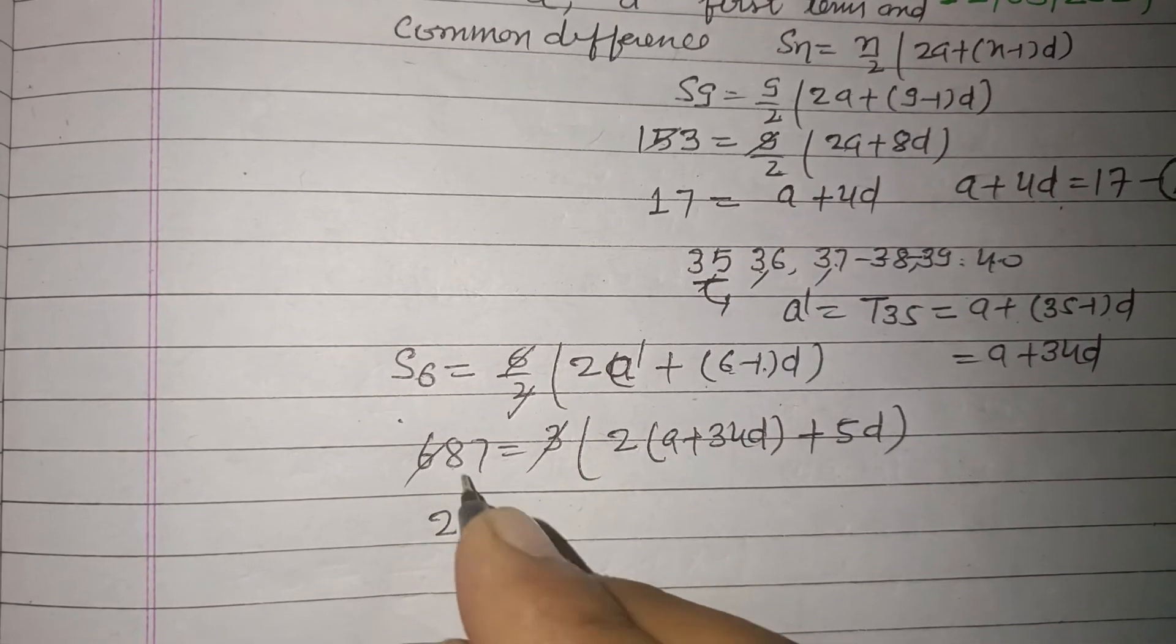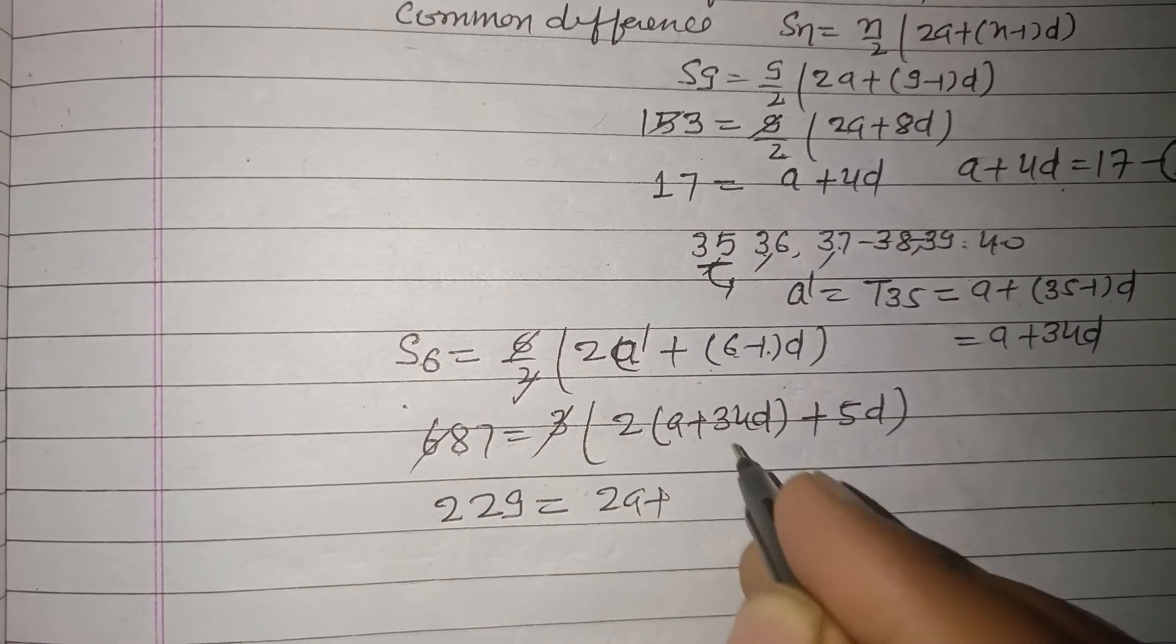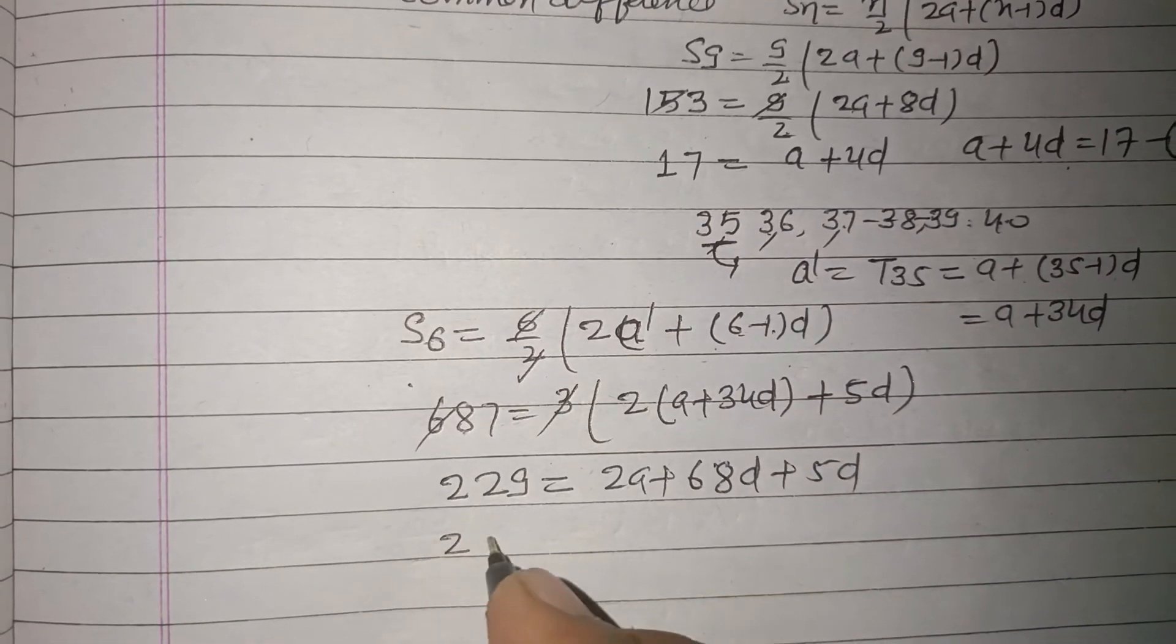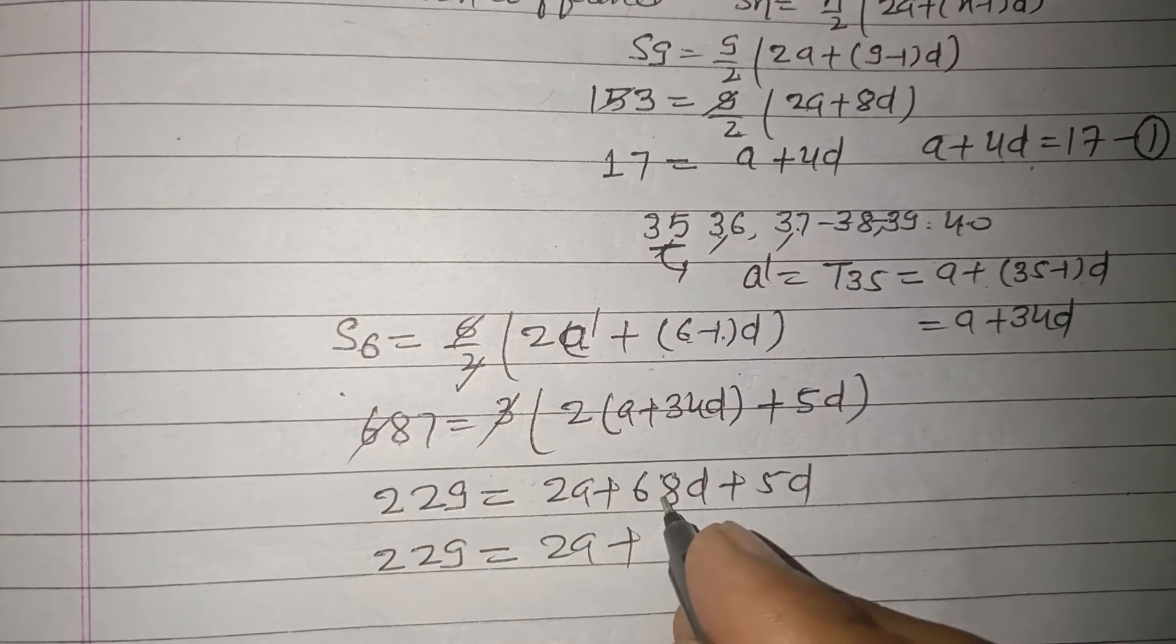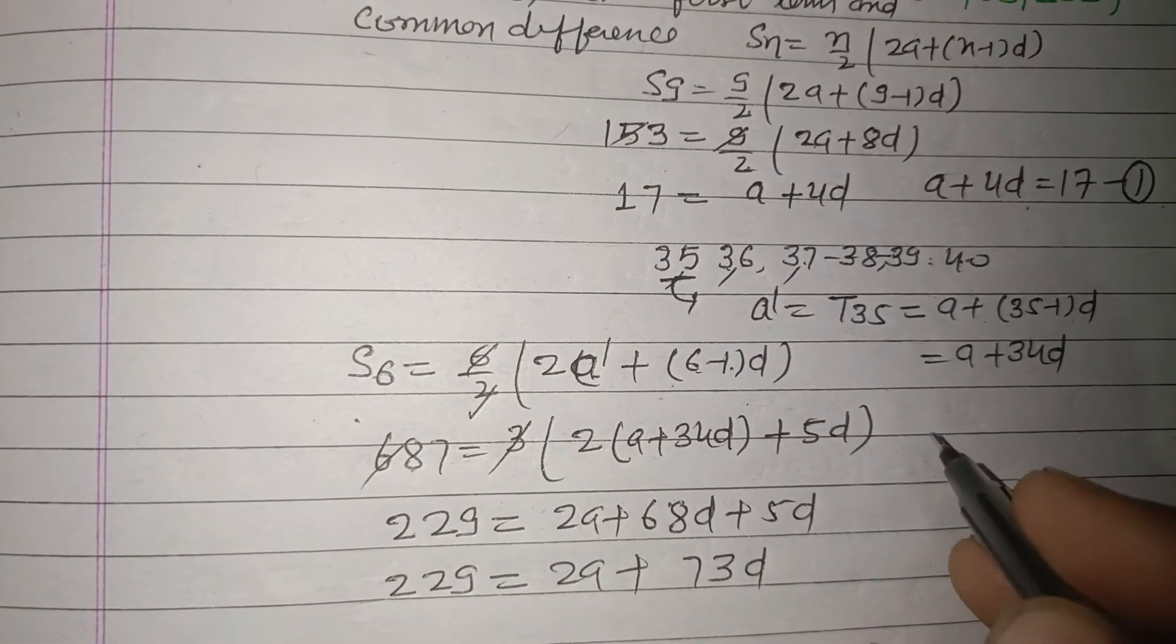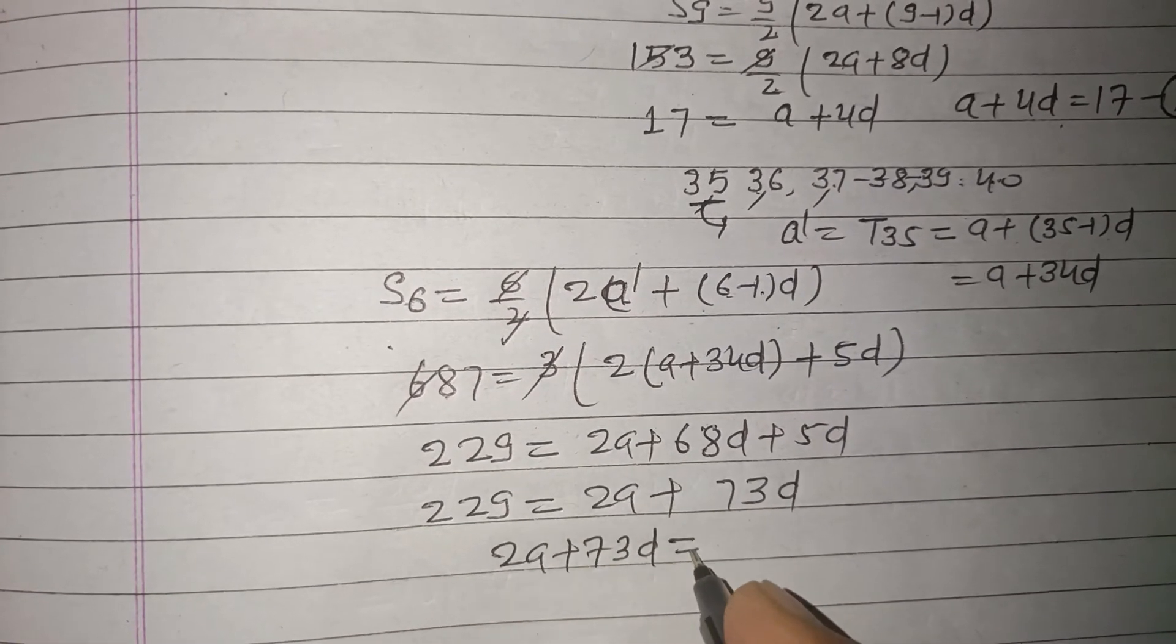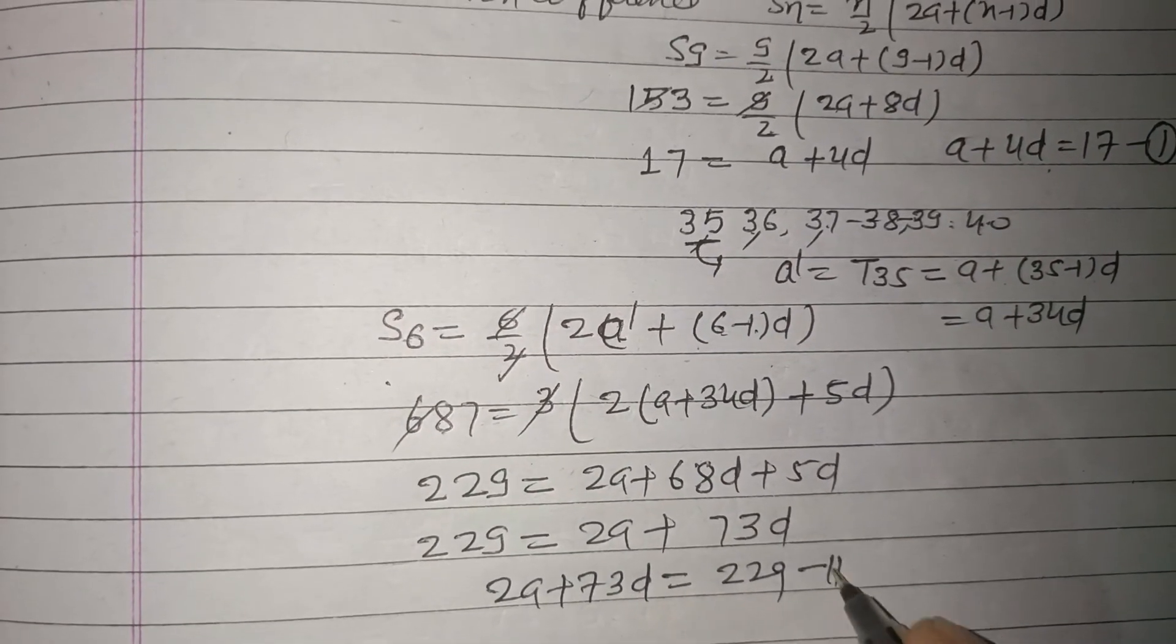So 3 times 2A plus 68D plus 5D. So 229 equal to 2A plus 73D. So our another equation is 2A plus 73D equal to 229. So this is our second equation.